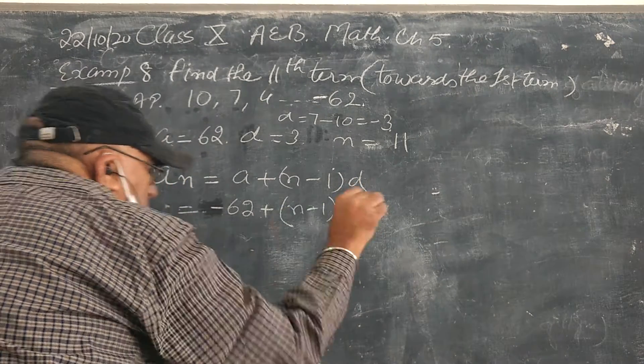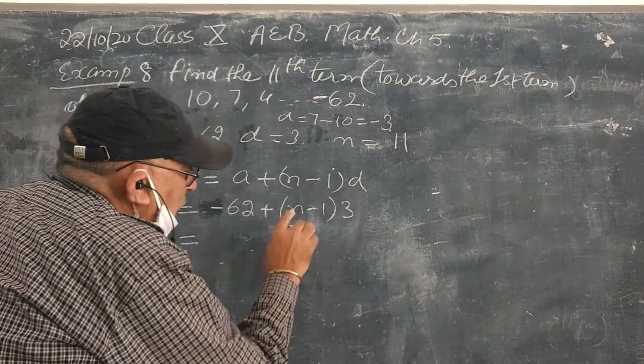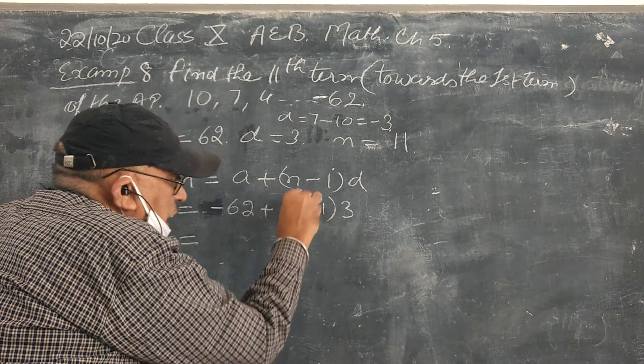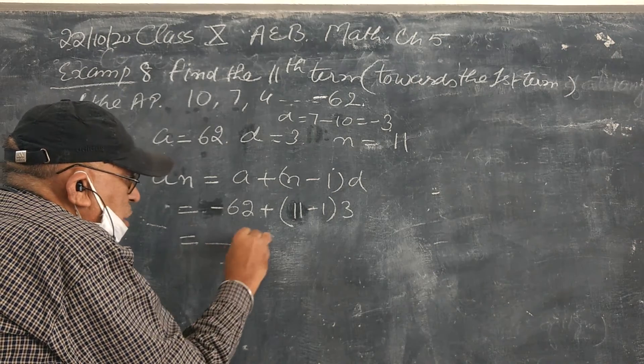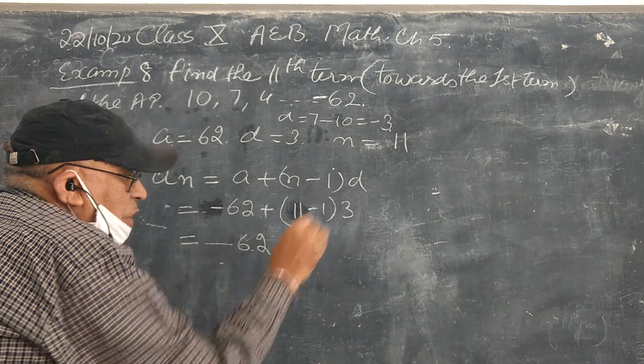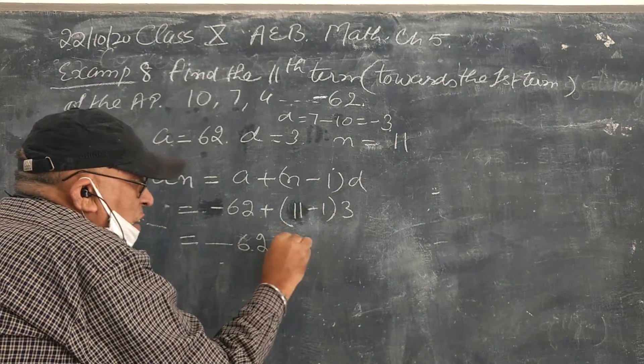We are calculating the only m time, the n 11, m 11. So I am going here minus 62, 11 minus 1, 10, 10 is up, 30.